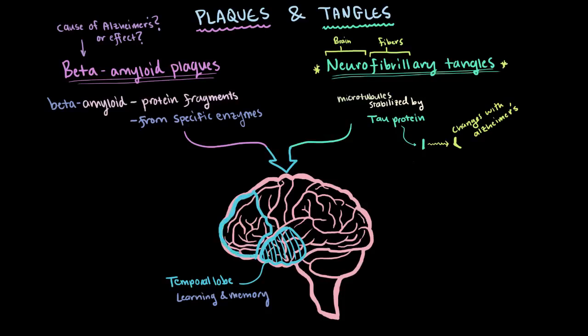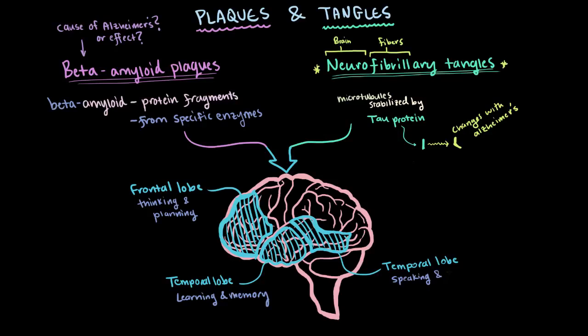And as it spreads and more neurons are affected, it usually goes up to the frontal lobe, where thinking and planning become affected. And then more of the temporal lobe as speaking and communicating become affected as well. And then it kind of moves up into your parietal lobe, where your sense of where your body is in relation to objects around you becomes affected.